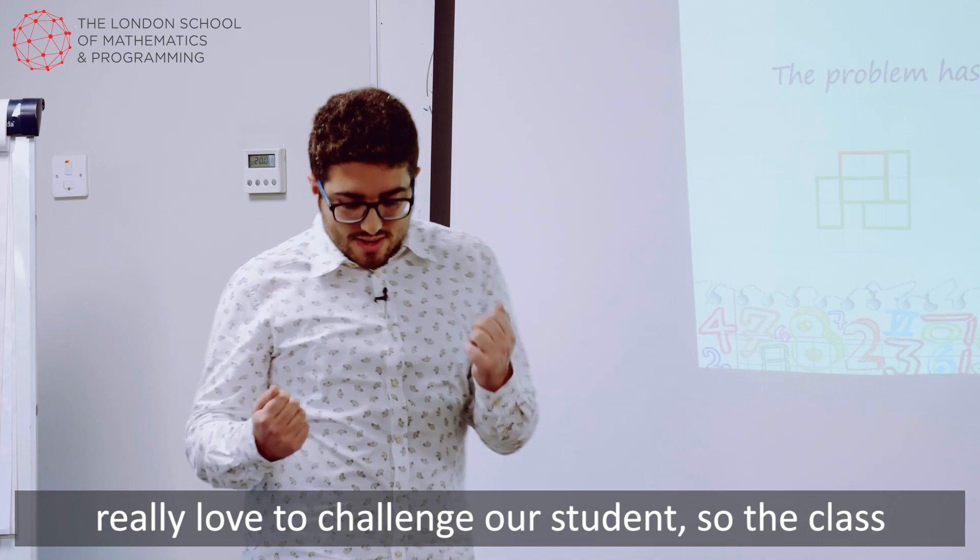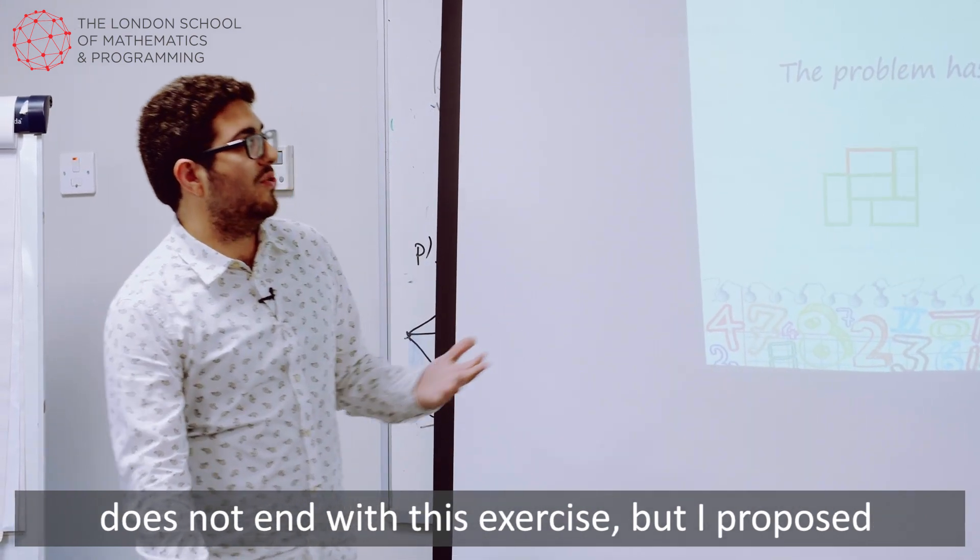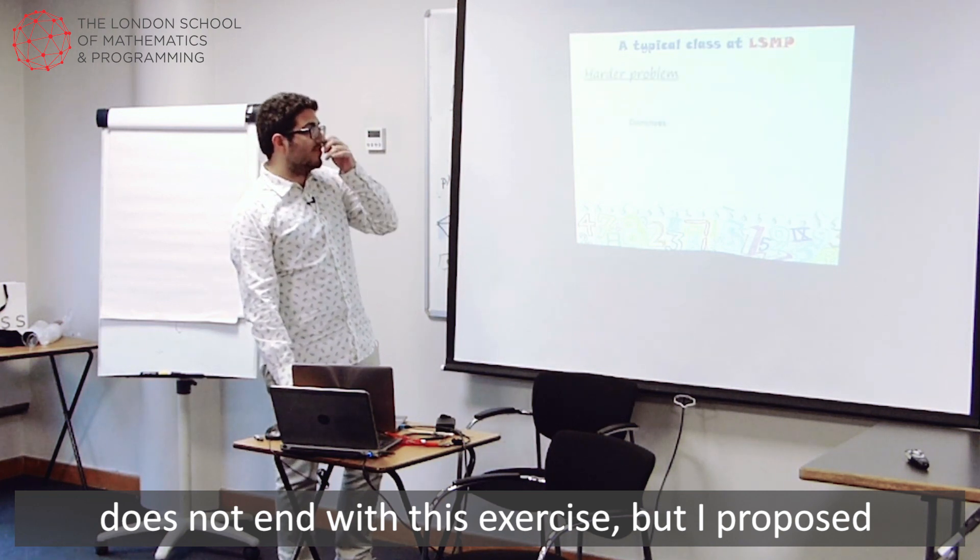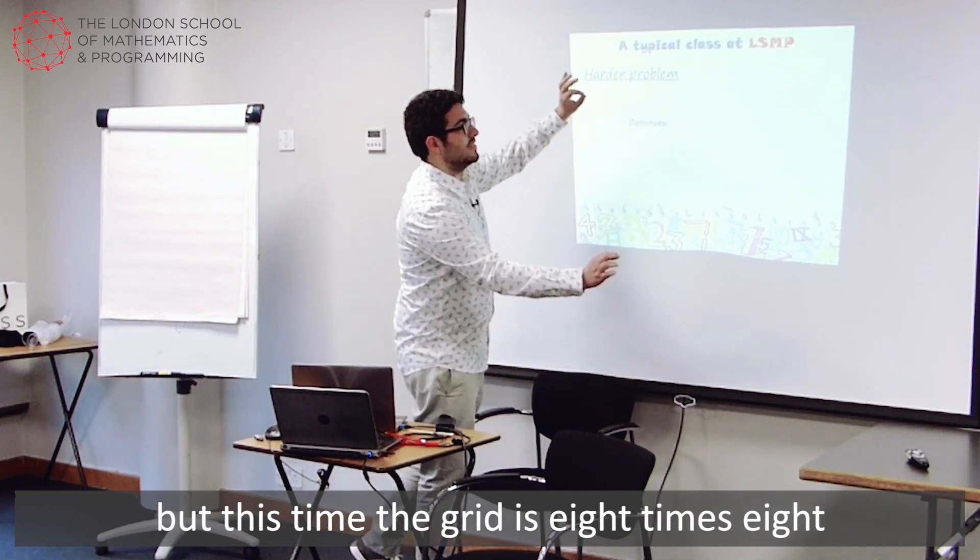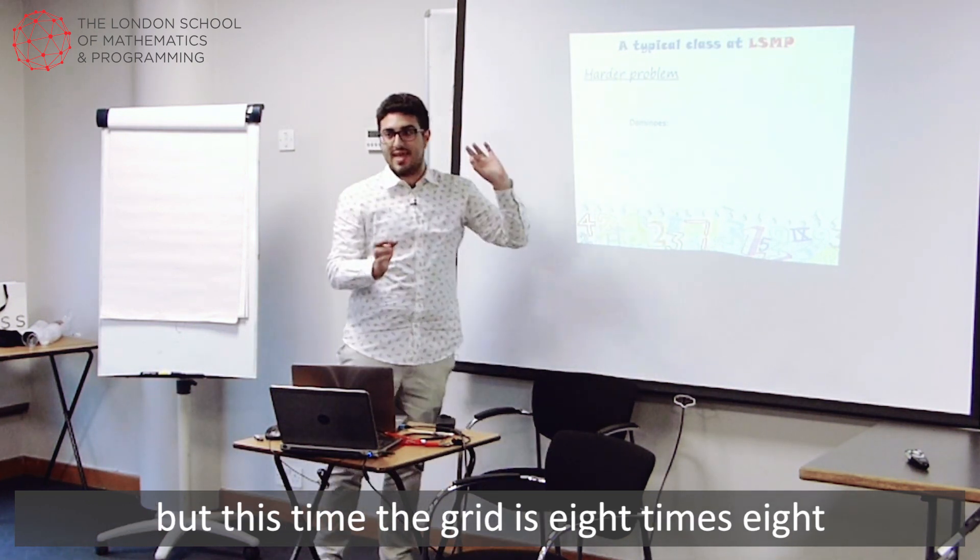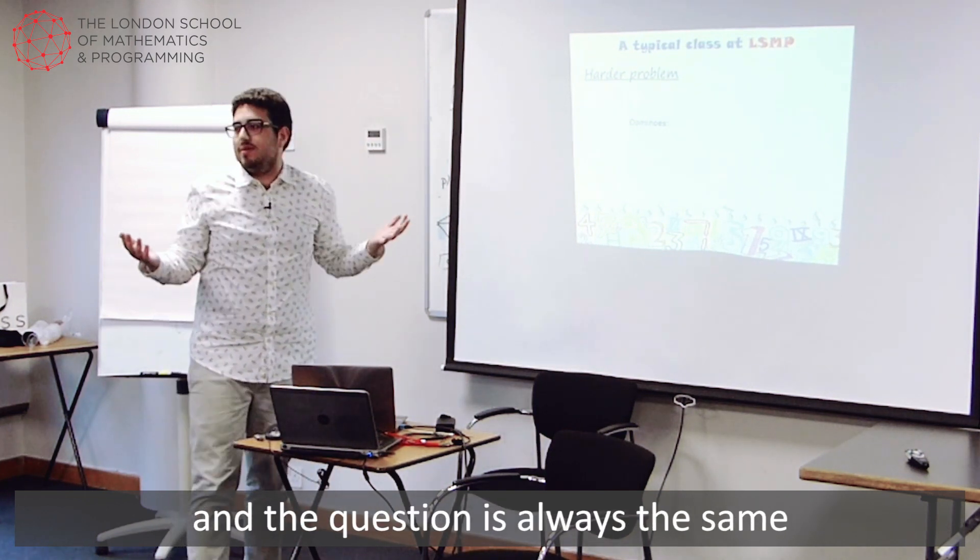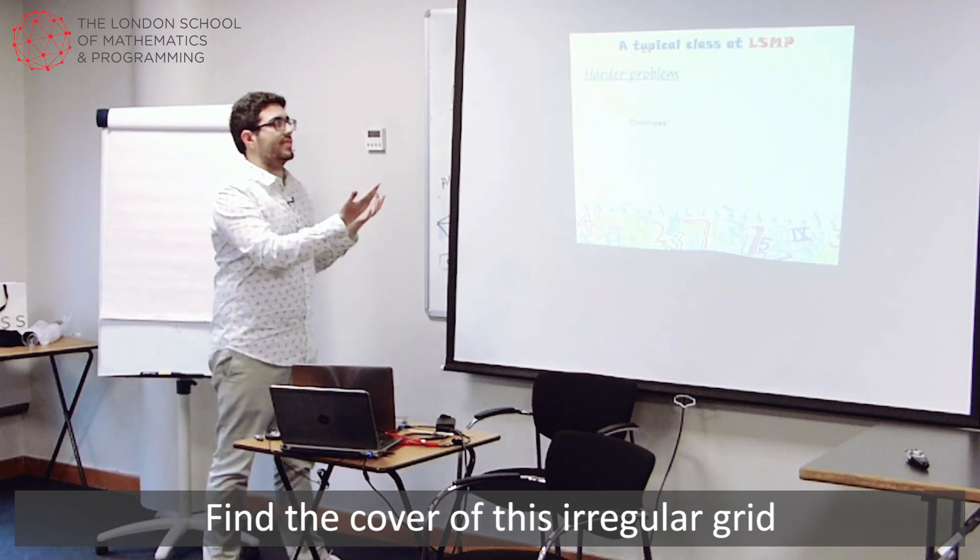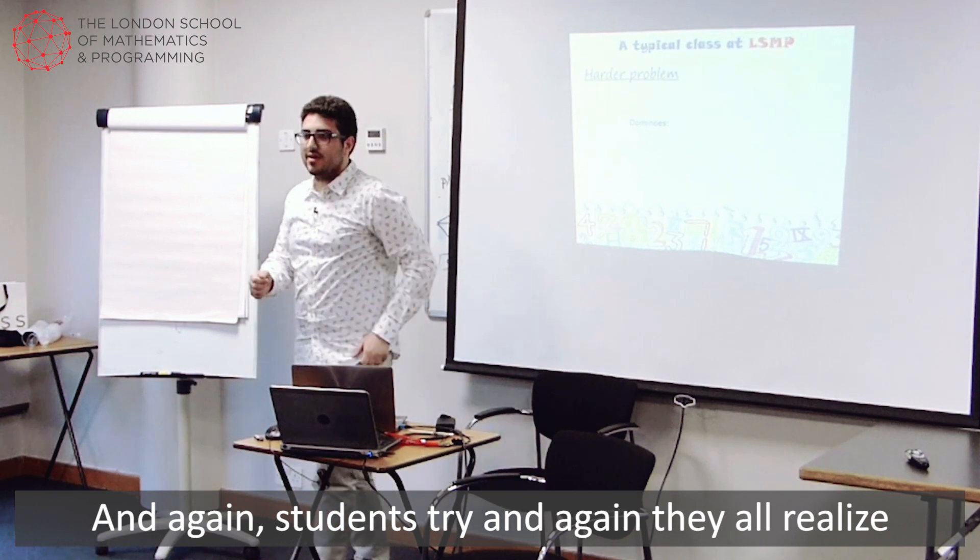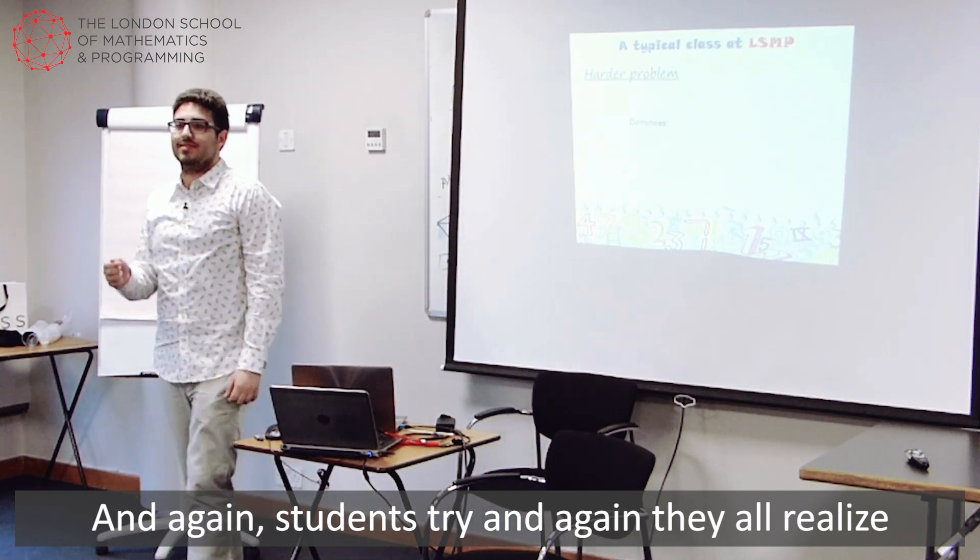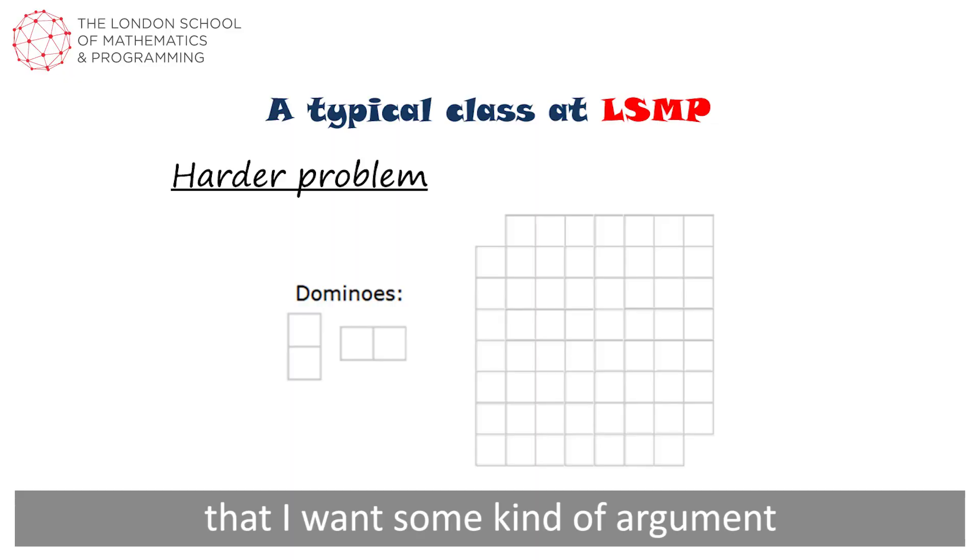And I think this is just amazing, but we do really love to challenge our students. So the class does not end with this exercise, but I propose also this other exercise. Same question again, but this time the grid is 8 times 8. And again I remove two opposite corners. And the question is always the same. Find a cover of this irregular grid. And again students try, and again they all realize that it is impossible. But this time they know that I want some kind of argument.